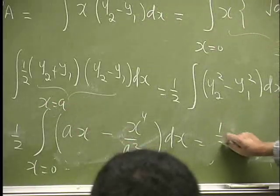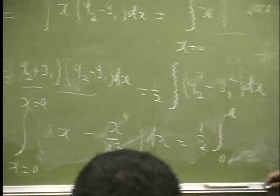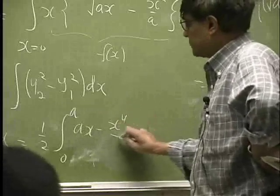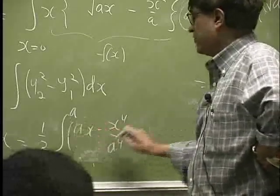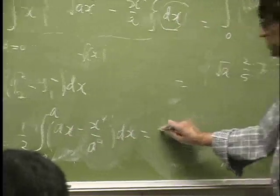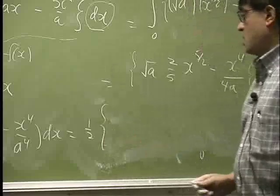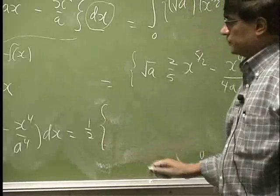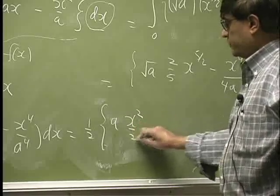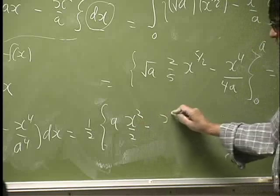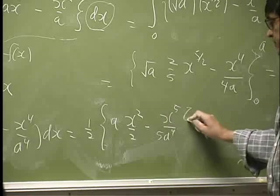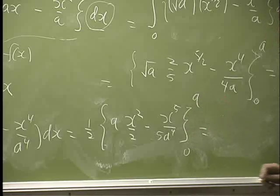So you have one-half, you're going from 0 to a, then you have ax minus x fourth over a squared dx. You do the integration on this. That should be a x squared over 2 minus x fifth over a squared, and this is going to be a 5, with the limit 0 to a.